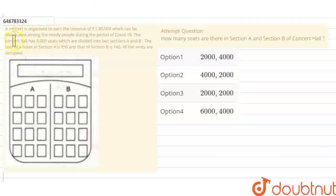Hello friends, let's look at this question. A concert is organized to earn revenue of Rs. 180,000, which can be distributed among needy people during the period of COVID-19. The concert hall has 4000 seats which are divided into section A and section B.